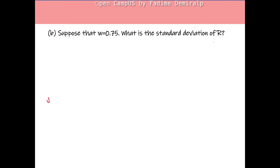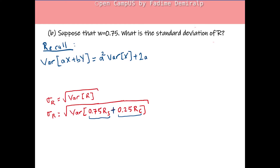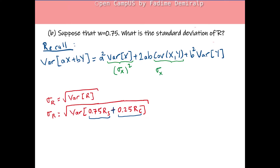Next, let's find the standard deviation of R, which is the square root of the variance of R. When W=0.75, R = 0.75·RS + 0.25·RC. Recall that Var(AX + BY) = A²·Var(X) + 2AB·Cov(X,Y) + B²·Var(Y). The variance equals the square of the standard deviation, and the covariance equals SD(X)·SD(Y)·Corr(X,Y).